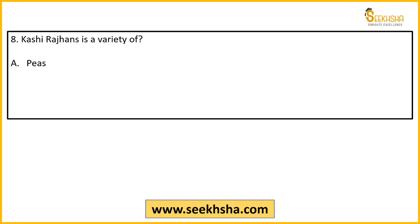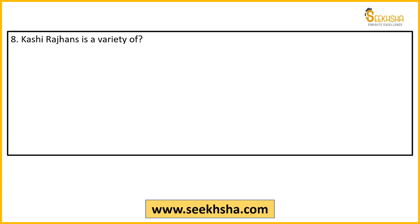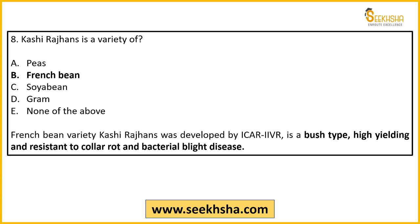Eighth question: Kashi Rajhans — options are A) rice, B) french bean, C) soya bean, D) gram, E) none of the above. The right answer is french bean. It was developed by ICAR-IIBR, is a bush type, high yielding variety, and is resistant to collar rot and bacterial blight disease. So if asked about which disease Kashi Rajhans is resistant to, the answer is collar rot and bacterial blight disease.